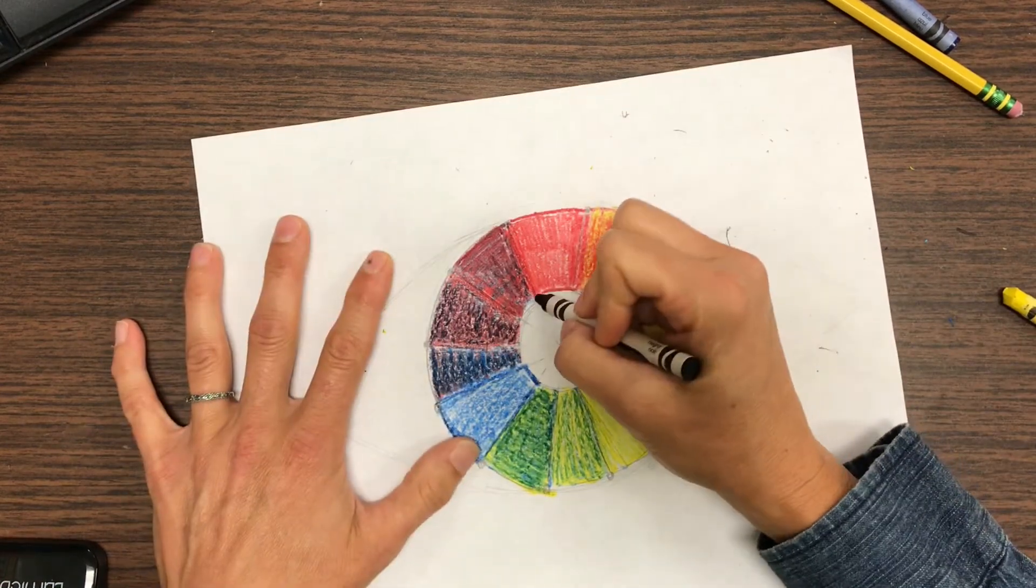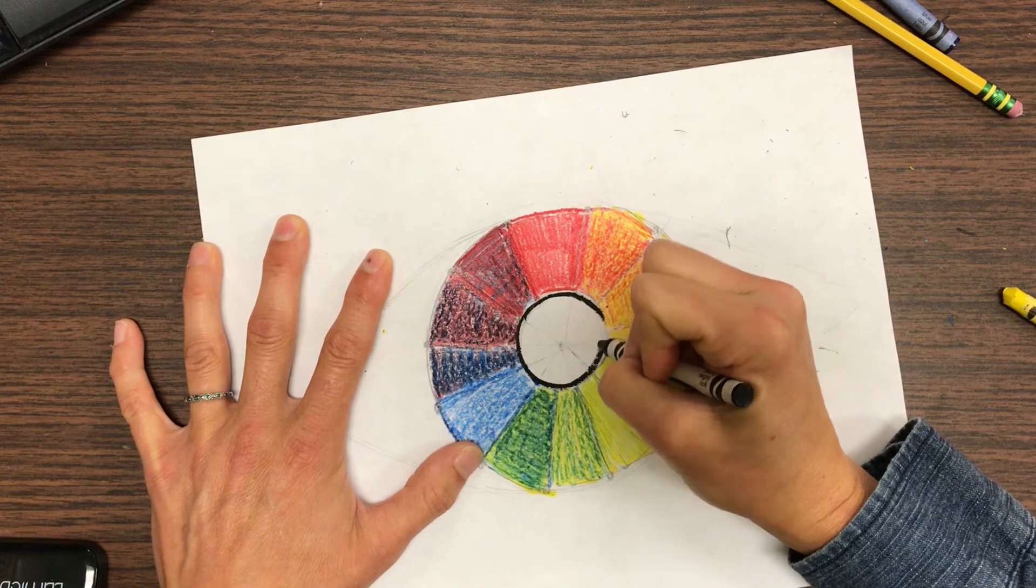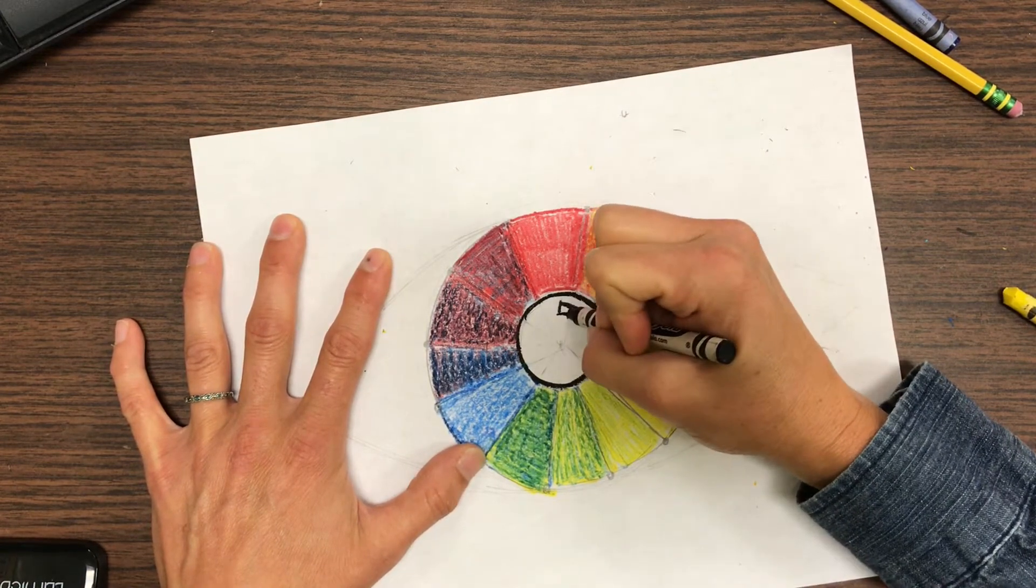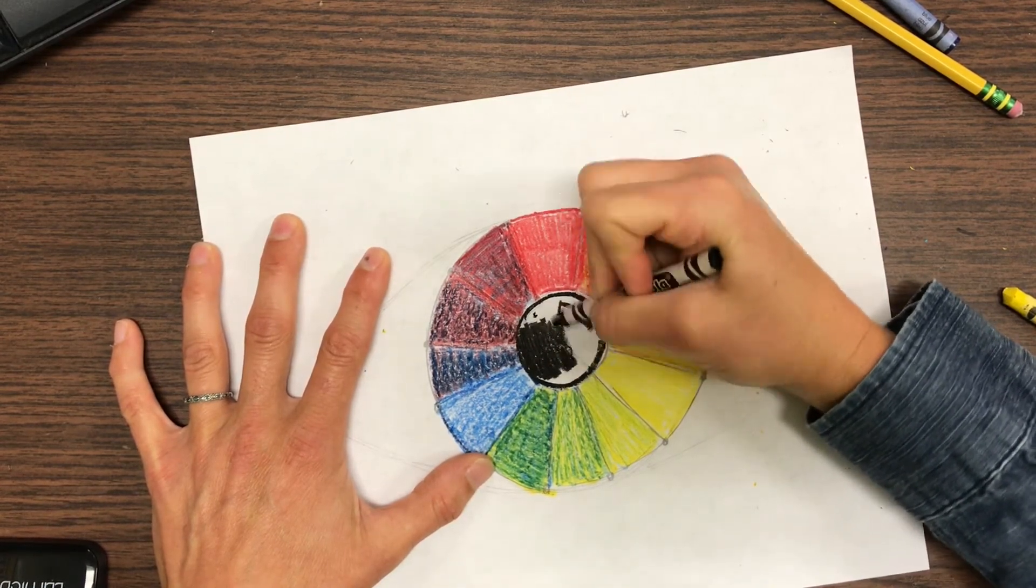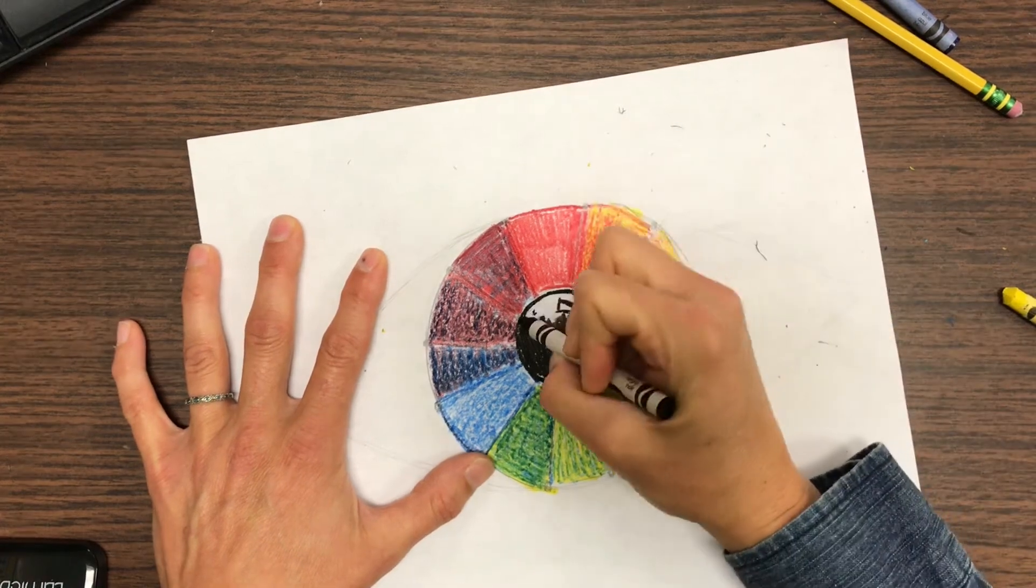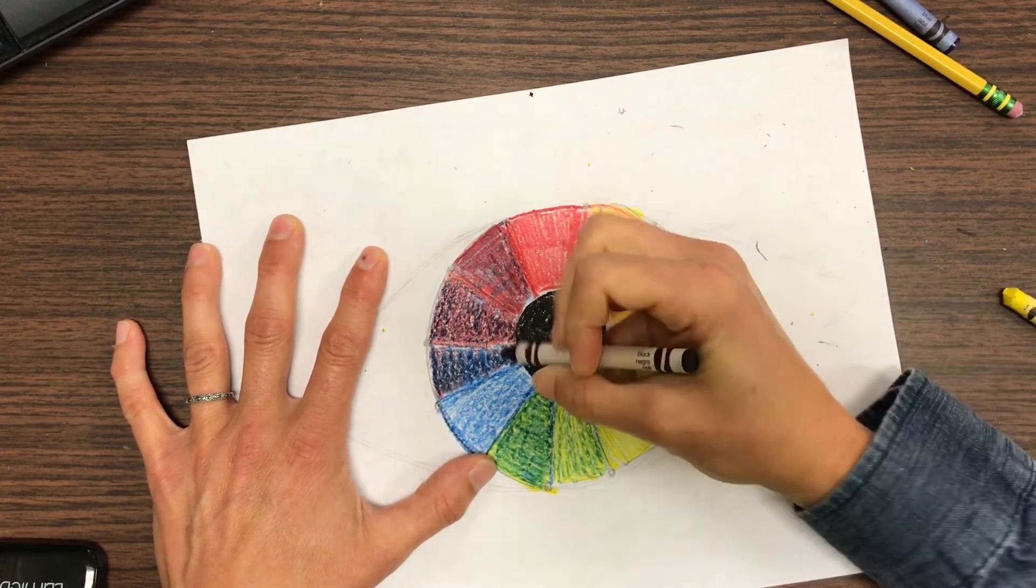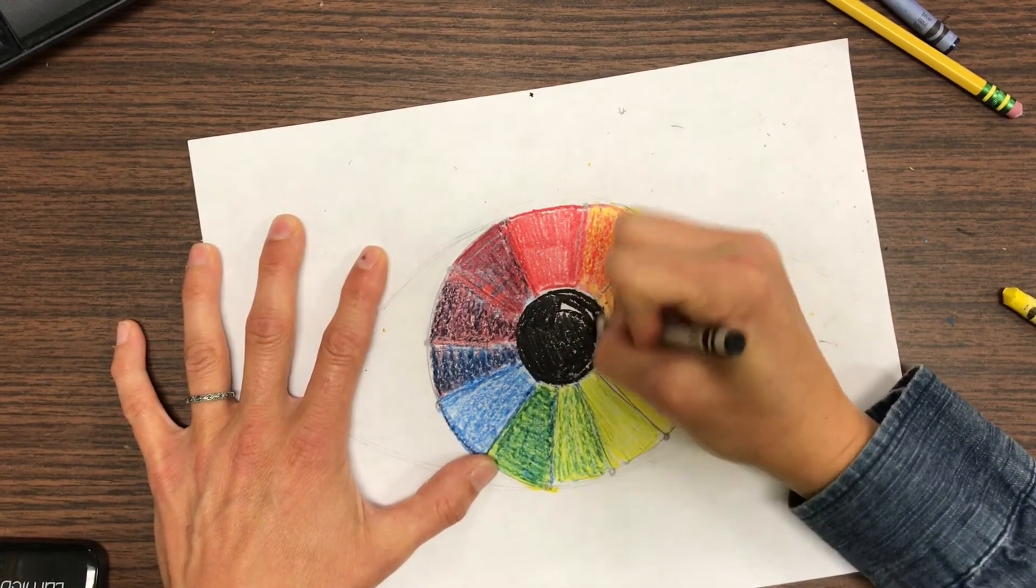Now I'm going to use my black crayon to color in the pupil. I'm going to leave a little reflection because when the light hits your eye there's a white mark where the light is reflecting. I'm coloring this in nice and dark.